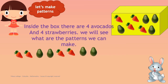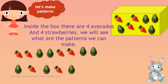Let's move to the next example. Here I am going to keep one avocado, next one strawberry, again one avocado. What comes next, children — a strawberry or an avocado? Yes, a strawberry. Very good. Again, avocado. We can continue the pattern until the fruits finish inside the box.